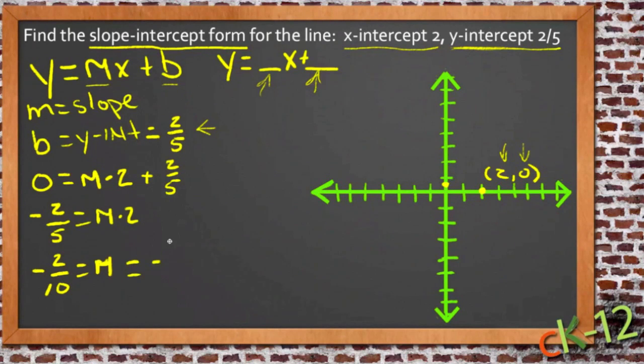So m then is negative one-fifth. Or go down one, go to the right five. Or go up one, go to the left five. Which is how these two points are sort of on the way to going.